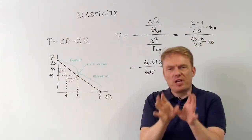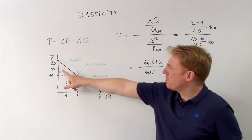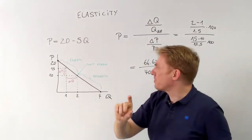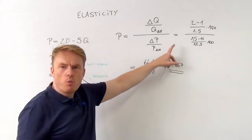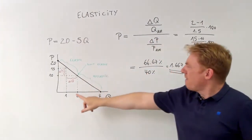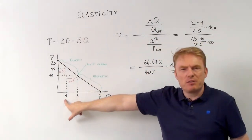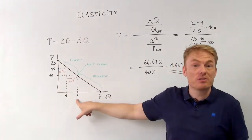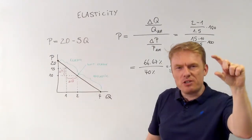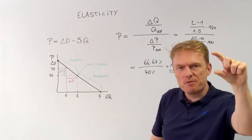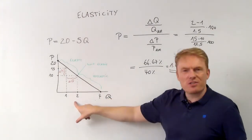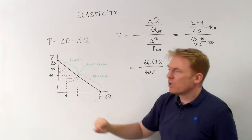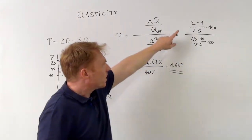Now let's change the price. We change the price from 15 dollars down to 10 dollars, which means the price is reduced by 5 dollars. So what happens to the quantity demanded? First the quantity demanded was 1. Now if the price equals 10, the quantity demanded equals 2 — a price reduction of 5 dollars leads to a rise in quantity demanded by 1 unit.